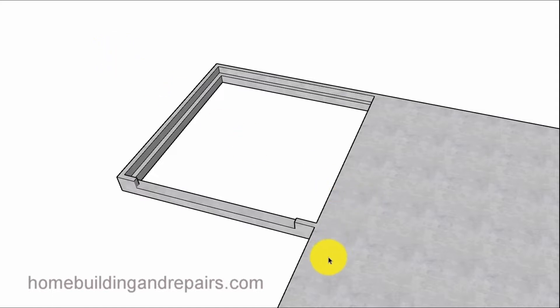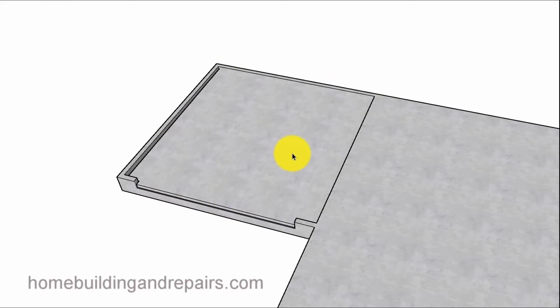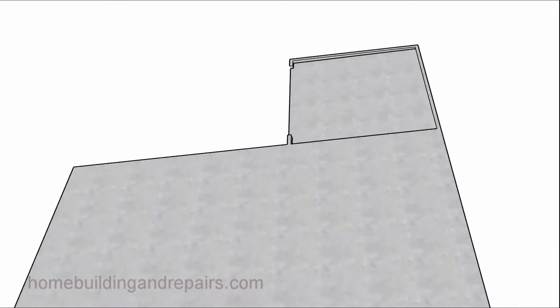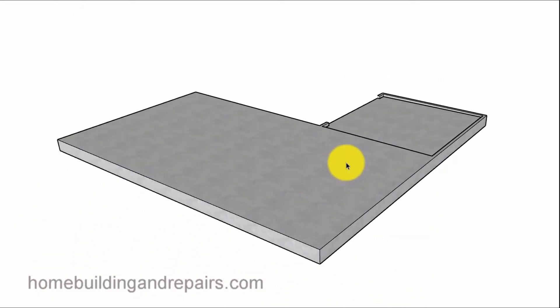First thing we have here is a monolithic or single poured slab. This should be poured all at once with a separate garage slab. The garage is usually at an angle sloping towards the opening. You can have a slab where all of this is poured at once, but most of the time it's going to be like this. You're going to have a stronger slab if you pour the whole thing at once, by the way.